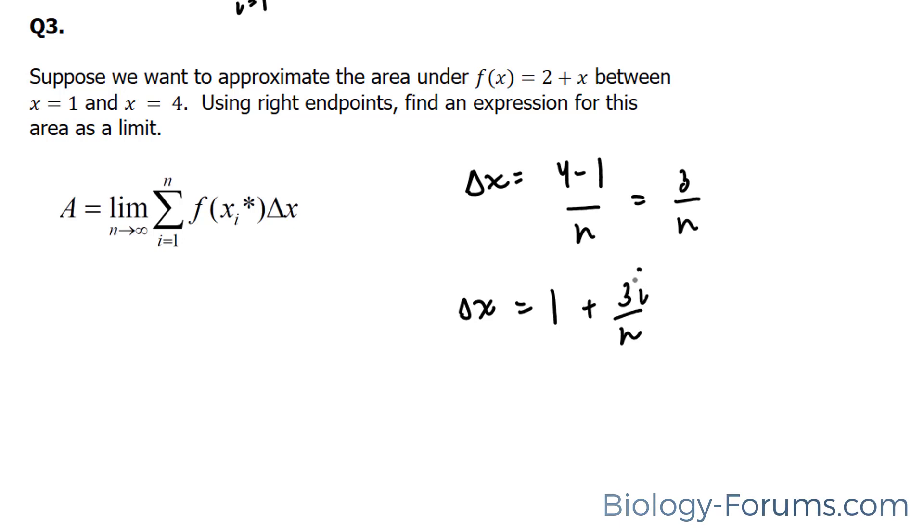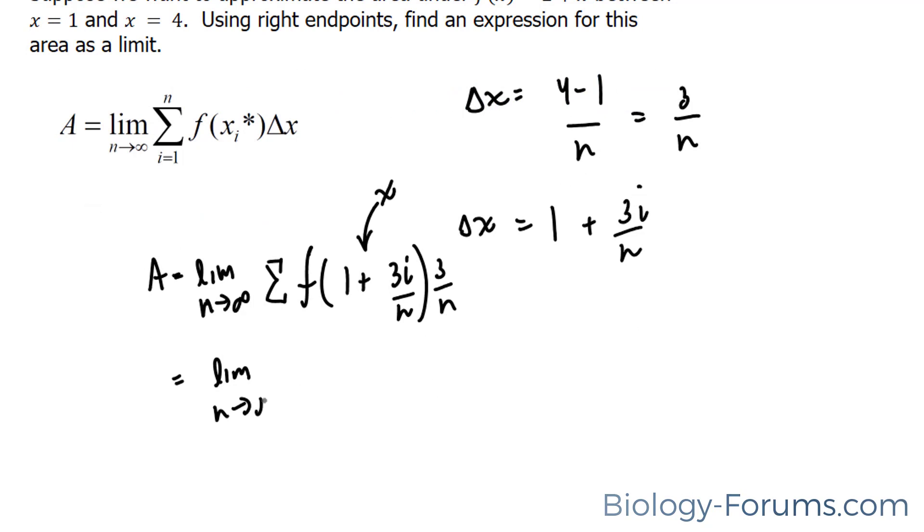So we're going to apply this to our definition. The area as the limit of n to infinity, the sum of this thing, 1 plus 3i over n times the change of x, which is 3 over n. Now remember, this represents your x. So we're going to apply all of this to our x. The limit as n approaches infinity, our function was 2 plus this thing, 1 plus 3i over n, 3 over n.